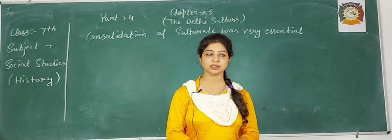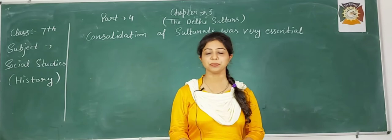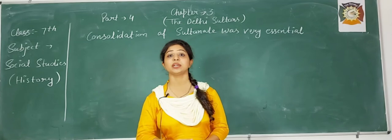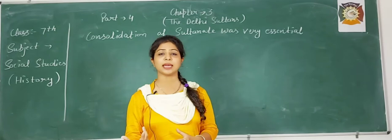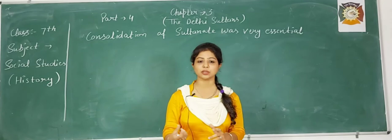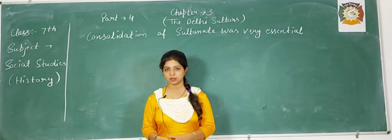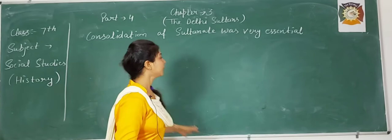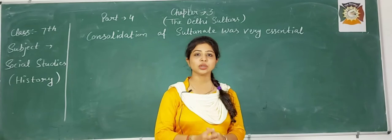In the last lecture, we discussed about the garrison towns as well as their expansion. It was very difficult for the Delhi Sultans to manage the garrison towns when they were at different places. So they decided to expand or consolidate the empire. In this part, we are studying how consolidation of Sultans was very essential.